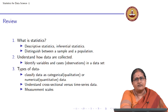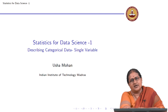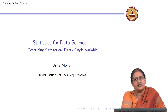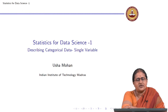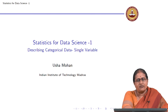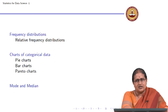Moving forward, we are going to understand how to describe categorical data. In this module, we start with describing categorical data for a single variable, and then we will look at measures of association when we have more than one variable. Today we are going to understand how to describe categorical data, starting with what we understand as a frequency distribution.